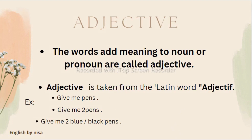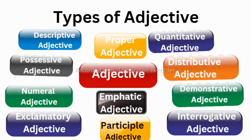The words that add some meaning to noun and pronoun are called adjectives — that can be in terms of quantity or quality. There are many types of adjectives: proper adjective, quantitative adjective, distributive adjective, demonstrative adjective, interrogative adjective, emphatic adjective, participial adjective, descriptive adjective, possessive adjective, numeral adjective, and also exclamatory adjectives.